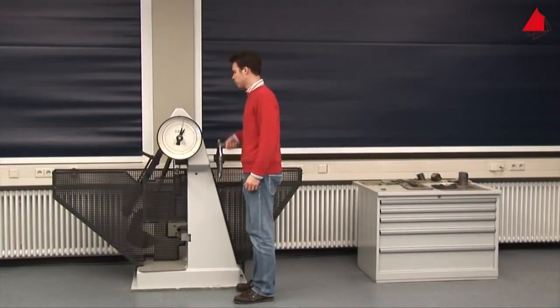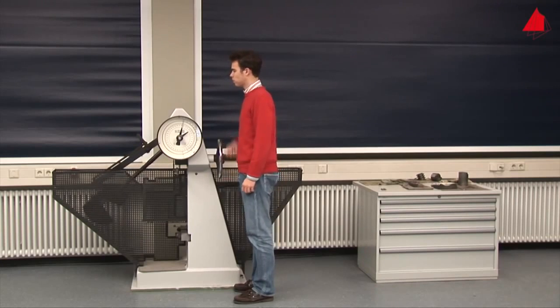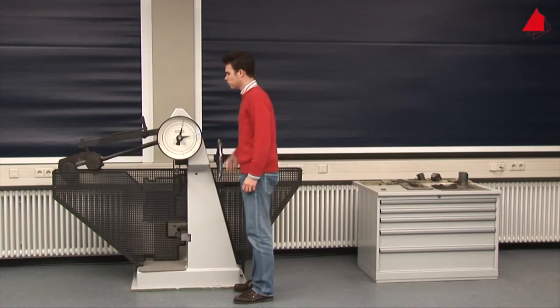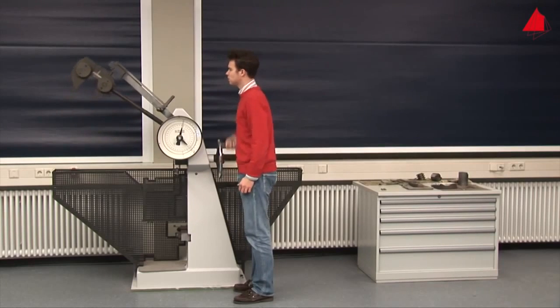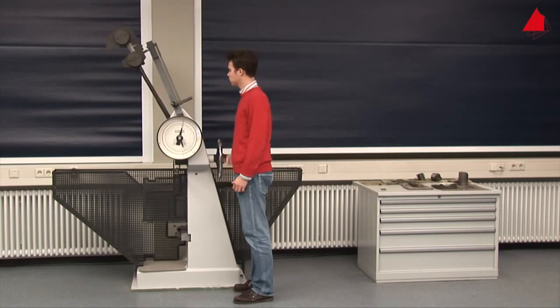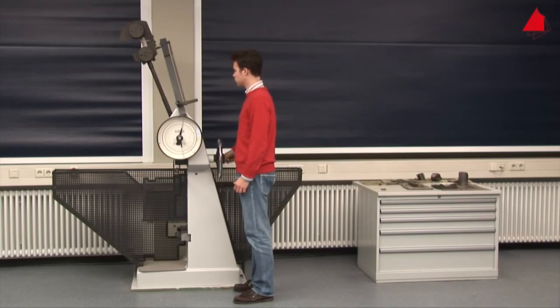A pendulum impact testing machine is used to do so. The pendulum on the machine has a heavy weight at the end. This is lifted into the starting position in step one. Then the tester checks whether the testing machine has been adjusted accurately.